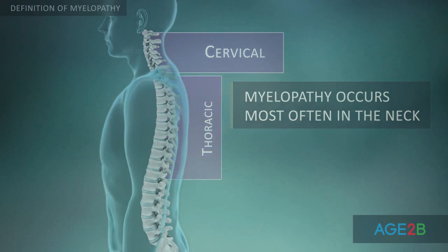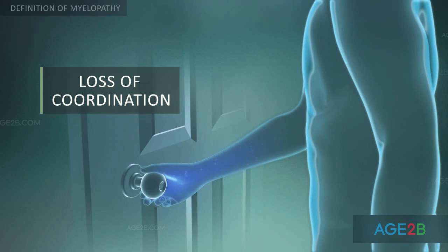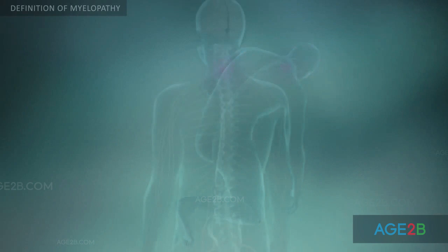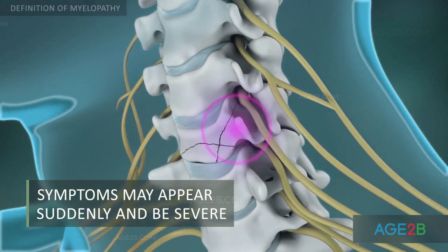Spinal cord problems occur most often in the cervical spine, but may sometimes occur in the thoracic spine. Myelopathy can be difficult to detect; usually it develops gradually in seniors with a loss of coordination, difficulty turning doorknobs, or problems navigating stairs. Sometimes, for example after a neck injury, myelopathy may develop and worsen rapidly. Its symptoms depend on the location and severity of spinal cord compression.